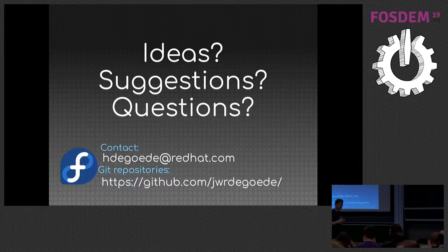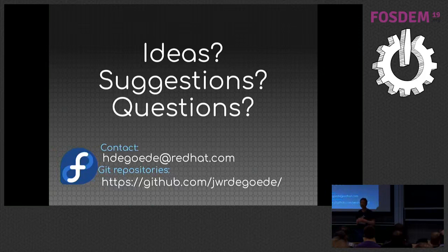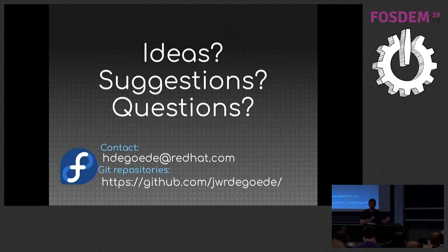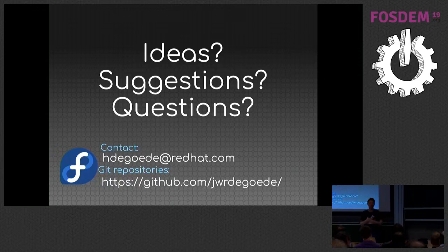Another question: for framebuffer handover, why use an IOCTL rather than an atomic mode setting property? Rob Clark chose an IOCTL. Operations like RMFB (unreferencing a framebuffer) and adding an FB to a CRTC are also IOCTLs, so it feels like it belongs in that set of operations. As a property it feels weird because you could set 'stick around' and then unset it — what would that mean? It's inherently a one-time operation, unlike a property you can change back.